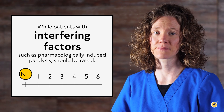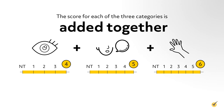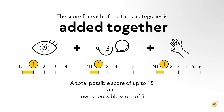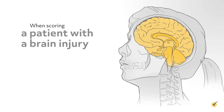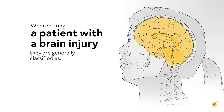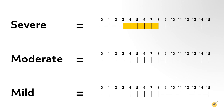The score for each of the three categories is added together, with a total possible score of up to 15 and the lowest possible score of 3. Once the score of a patient has been identified, it is important to understand the meaning. When scoring a patient with a brain injury, they are generally classified as severe, moderate, or mild. Severe is 3 to 8 on the Glasgow Coma Scale, moderate is 9 to 12, and mild is 13 to 15.